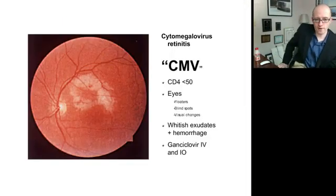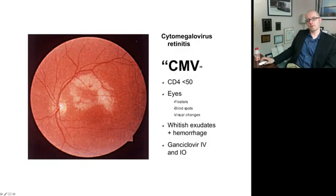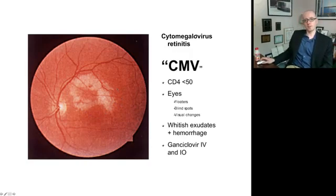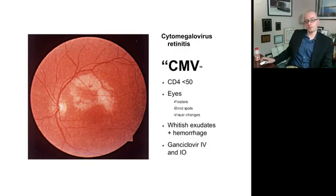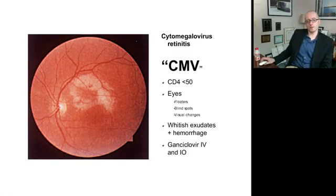CMV, or cytomegalovirus retinitis, is another dread complication of AIDS: the normal retina becomes clouded by characteristic white exudates of cytomegalovirus. This only occurs at very low CD4 counts. People can present with one-sided floaters or blind spots, and other visual changes. If not caught and untreated on one side, it can progress to blindness, then the other side starts getting the same symptoms — irreversible blindness. This is treated with ganciclovir, usually IV and also intraocularly, with a small insert the ophthalmologist can place.